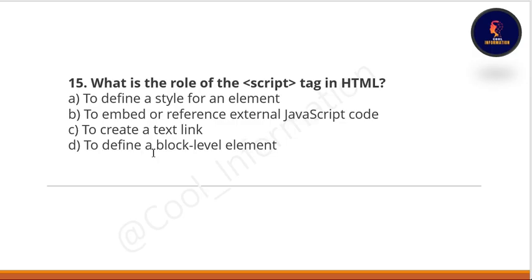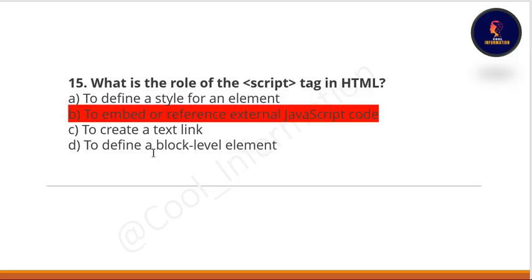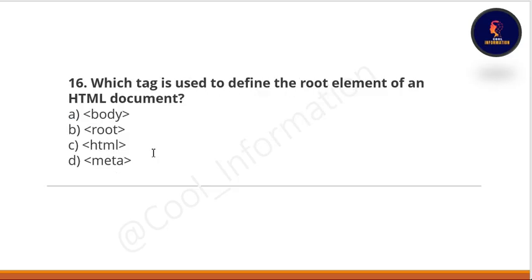Next question: what is the role of the script tag in HTML? Option A: to define a style for an element. Option B: to embed or reference external JavaScript code. Option C: to create a text link. Option D: to define a block-level element. The correct option is B — to embed or reference external JavaScript code.